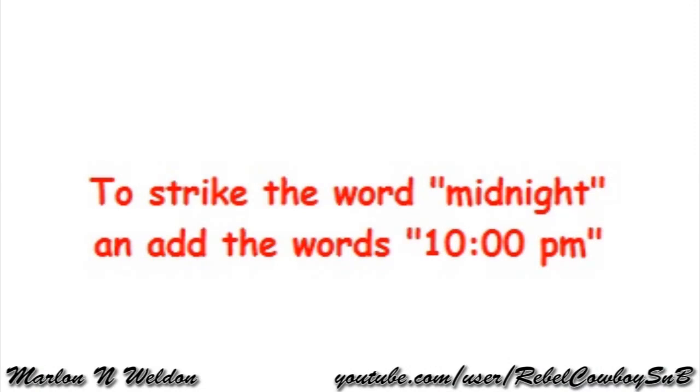On the other hand, a bill that changes an old law is a little bit harder to understand. At the federal level it's usually pretty simple — it says something like 'to strike the word and to add the word.' For example, if we have a fictitious law about frogs not croaking after midnight, a bill to change that law might say 'to strike the word midnight and add the word 10 p.m.'